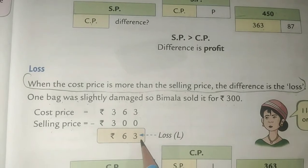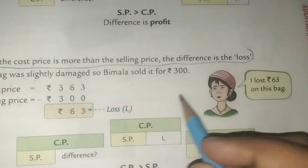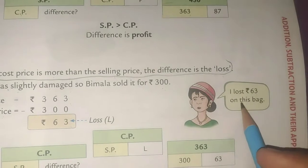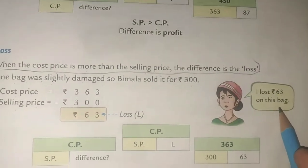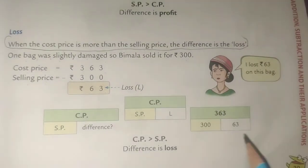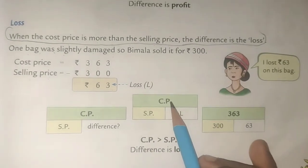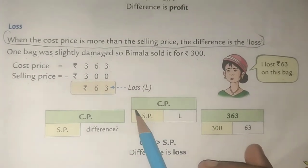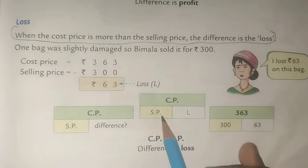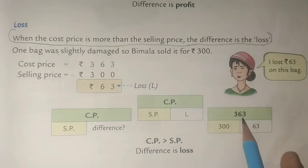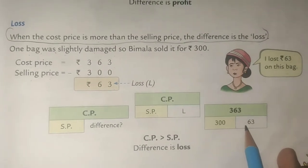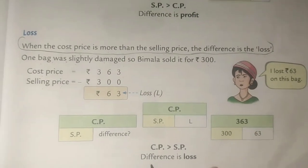Bimla lost 63 rupees on this bag. The cost price is more than the selling price, and whatever difference comes — which is 63 — it is called a loss.